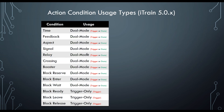Here's a table showing all the different condition elements and how they can be used. As you can see, most of them can be used either as a trigger or a state, apart from these three at the bottom of the table: block ready, block leave, and block release. These are the trigger-only elements, and the rest are dual mode elements.